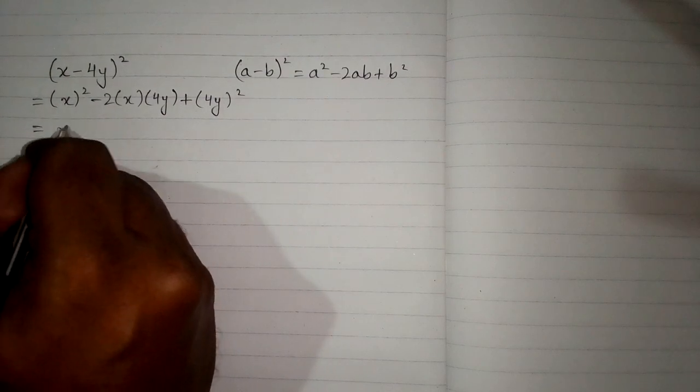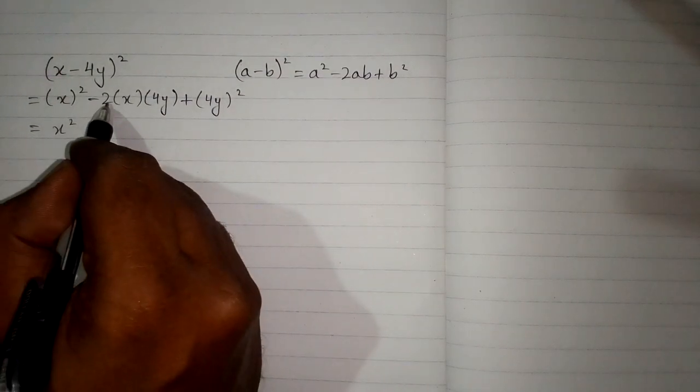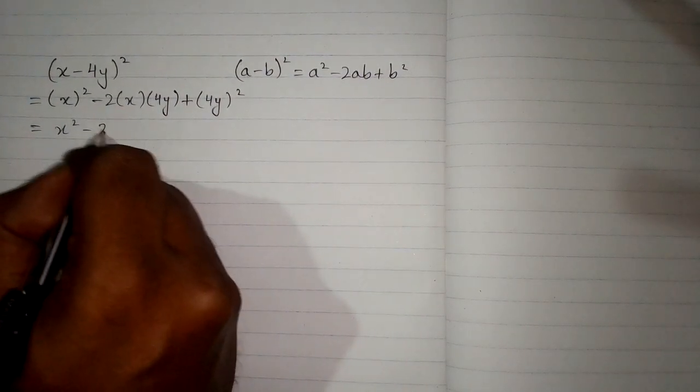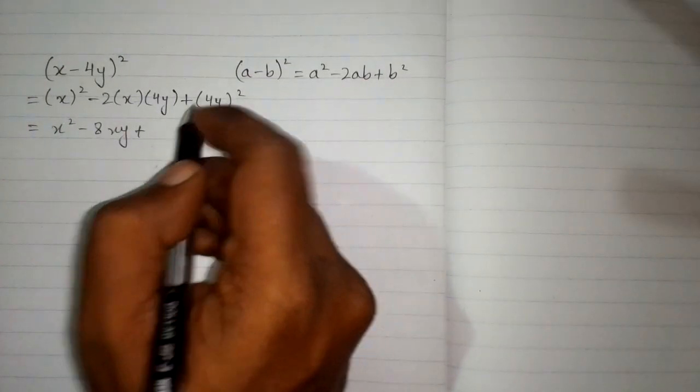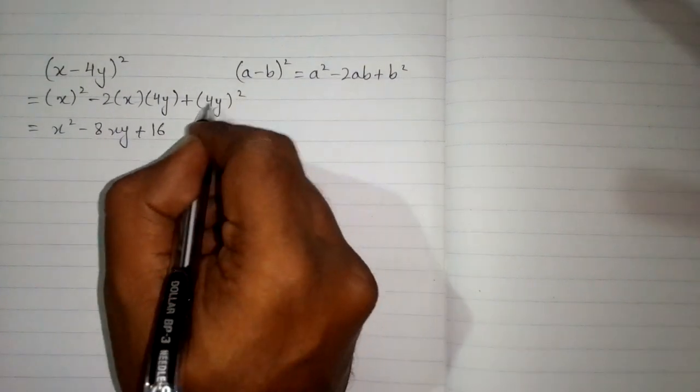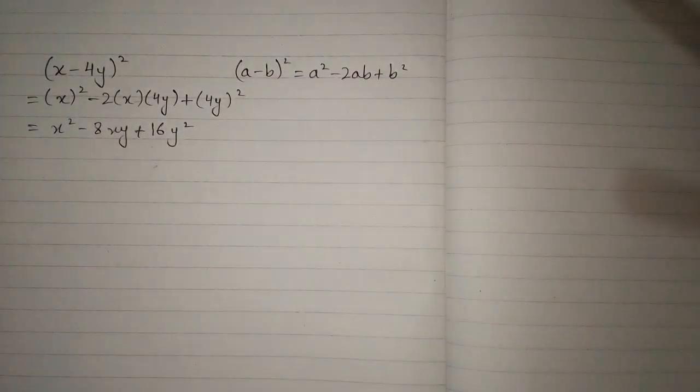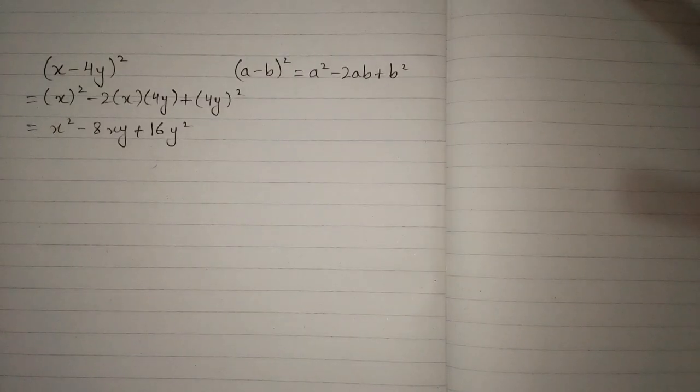Now square of x is x square, and 2 times 4 is 8xy, plus square of 4 is 16 and square of y is y square. So x minus 4y whole square equals x square minus 8xy plus 16y square.